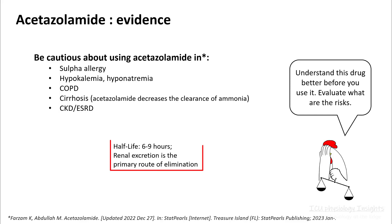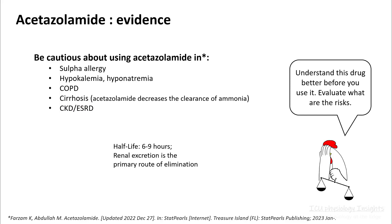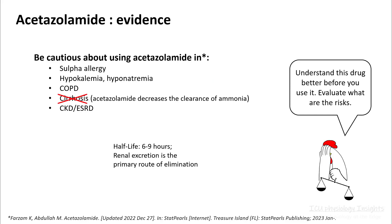The half-life of acetazolamide is around 6 to 9 hours and it is excreted primarily by the kidneys, so this medication should not be used in patients with kidney disease. Since it worsens hypokalemia, try to avoid using it in hypokalemic patients. Acetazolamide also decreases clearance of ammonia and can precipitate hepatic encephalopathy in cirrhotic patients. In COPD patients, it can result in hypercapnia, and since it has a sulfa moiety, try to avoid it in patients with sulfa allergy.